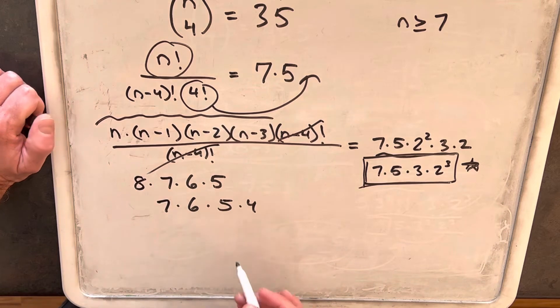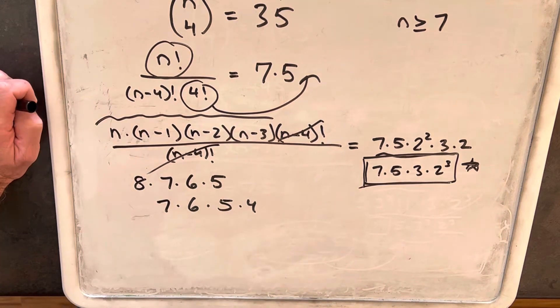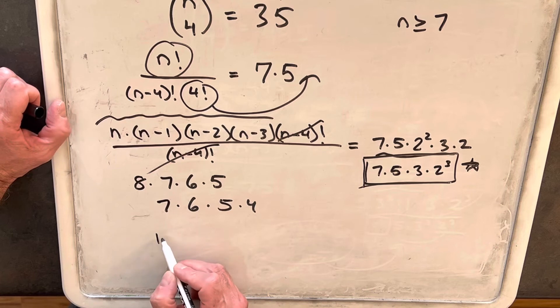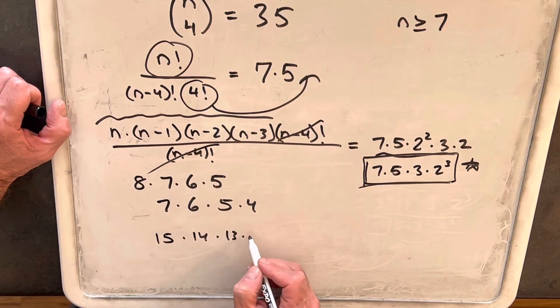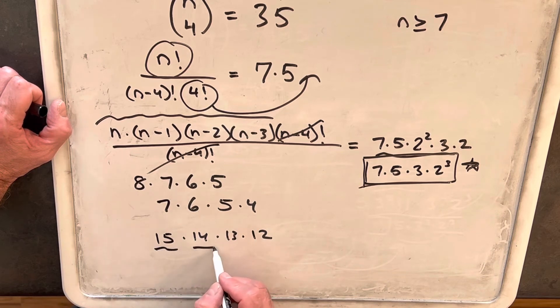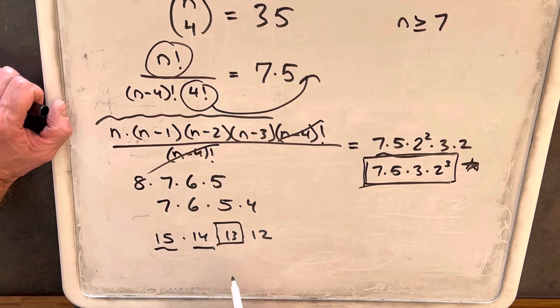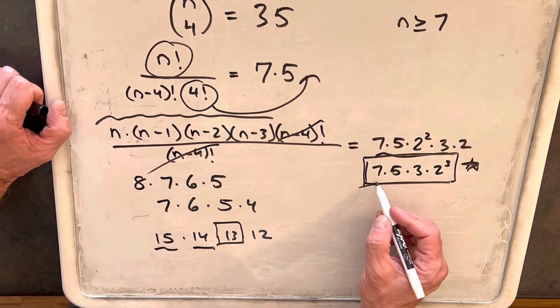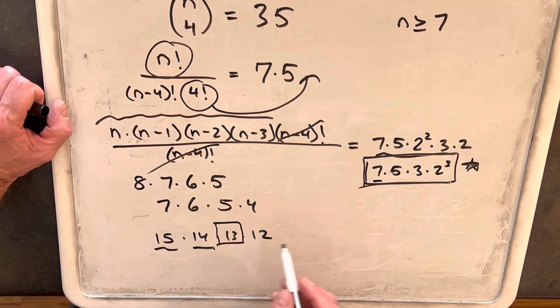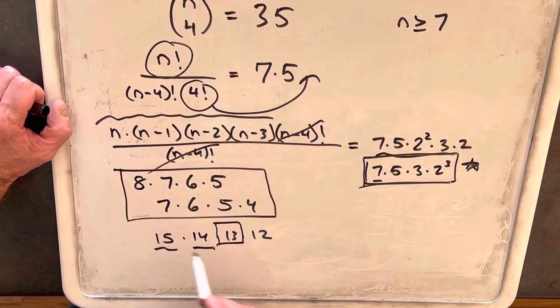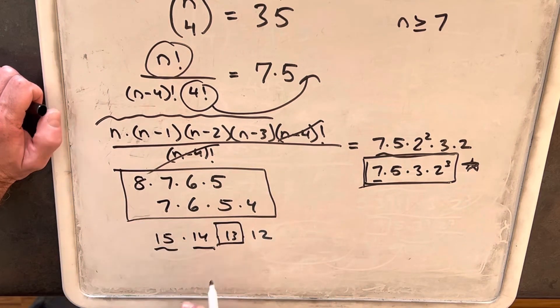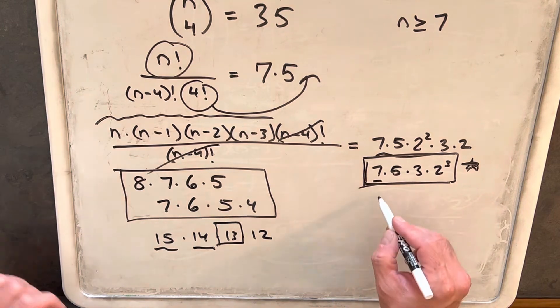Now there are other combinations that would include a 7 and 5. Like, for example, we could have 15 times 14 times 13 times 12. We have a 5 in here. We have a 7 in here. But the problem is we don't have a 13. So that's how we're using the largest prime to kind of narrow down the options. So this will tend to happen where we know we only have two options, because if we go higher, we're going to end up with primes that are not in our factorization.